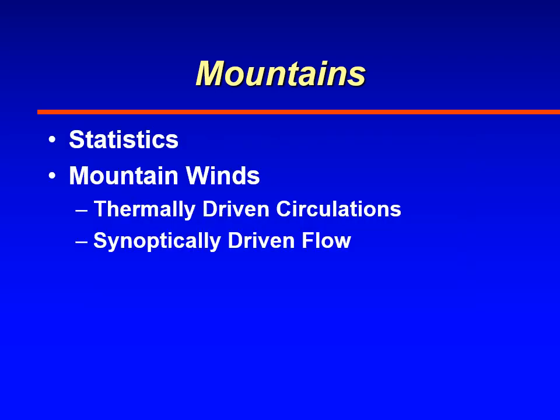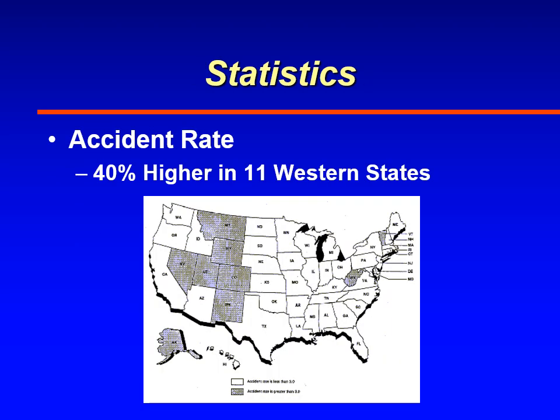First off, we're going to start with statistics — we're going to look at accident statistics in the mountains, and then we're going to work our way into the different kinds of mountain winds. Your reading assignment was Advisory Circular 00-57, which talks about hazardous mountain winds and their indications.